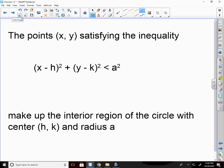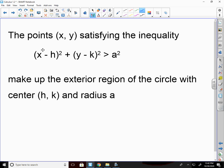The points x, y that satisfy the inequality. We have x minus h squared plus y minus k squared. That looks like the first half of our circle. And then we have the a squared, but it's a less than sign. That makes up the interior region of the circle. That's where all these points that are inside of there have to be less than the radius squared. Or else they would be outside of the circle. Speaking of which, the points x, y satisfying the inequality, where that's greater than a squared, makes up the exterior region of the circle. Because this half would be bigger than what our radius is. So it's all the things that are outside of the circle.